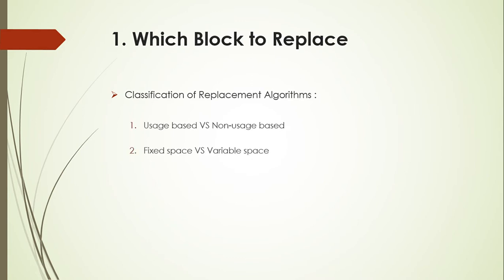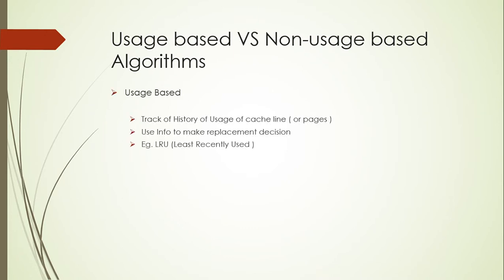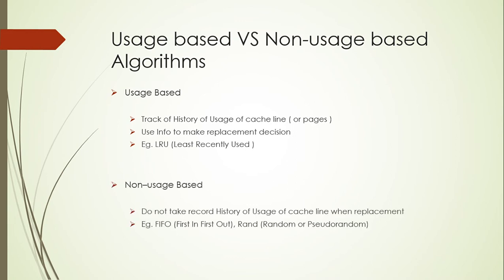In uses-based versus non-uses-based algorithms, the uses-based approach keeps track of the history of uses of cache lines, and displacement decisions are made based on that history. The best example is LRU — Least Recently Used. Non-uses-based algorithms do not keep track of the records of uses of cache lines when making replacement decisions.